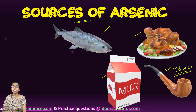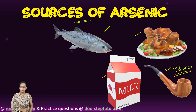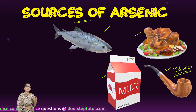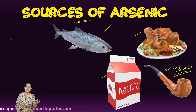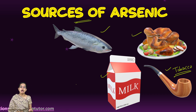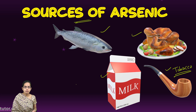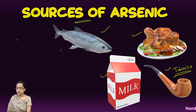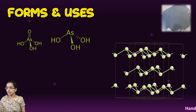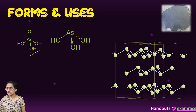Various countries across the globe — China, Belgium, Morocco, and Japan — are some of the major producers of arsenic in the world.